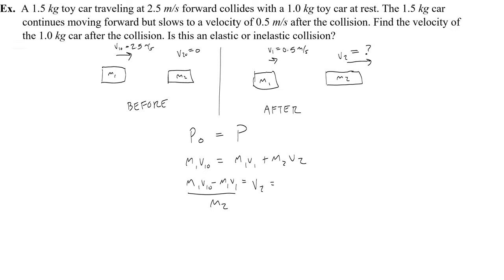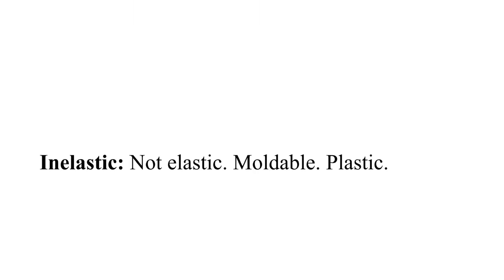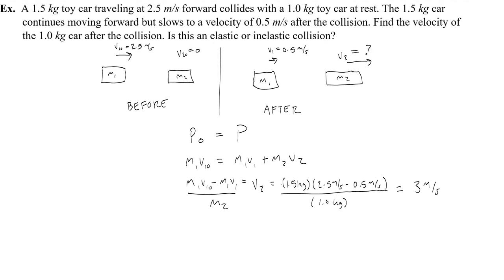The velocity of the second car is (m₁v₁₀ − m₁v₁) / m₂. Factoring out the mass: 1.5 kg times (2.5 − 0.5), divided by 1 kg. I'm factoring the mass out so I don't have to write it twice. Dividing by the mass of 1 kg gives v2 = 3 meters per second as the final velocity.